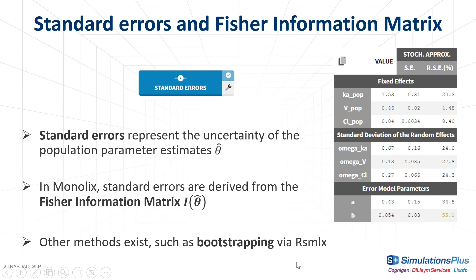In Monolix, standard errors are calculated via the estimation of the Fisher information matrix, and they are given in particular in the table of population estimates. Other methods have been proposed to estimate the standard errors, such as bootstrapping, which is available via our RSMLX package. To know more about this package, you can click on the link at the top of the video.